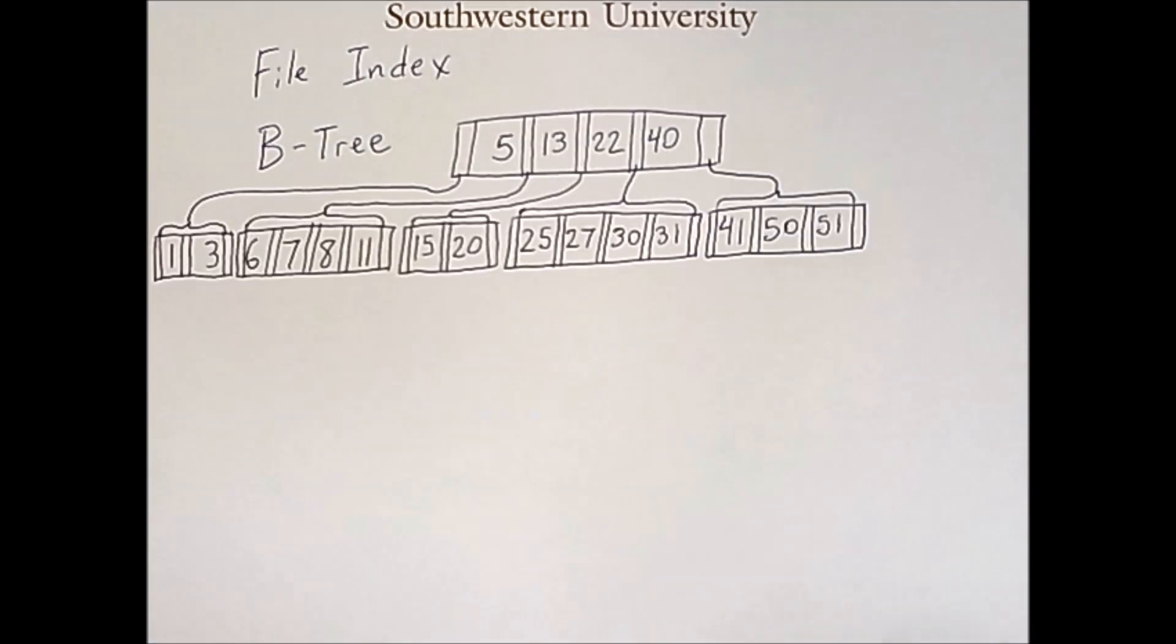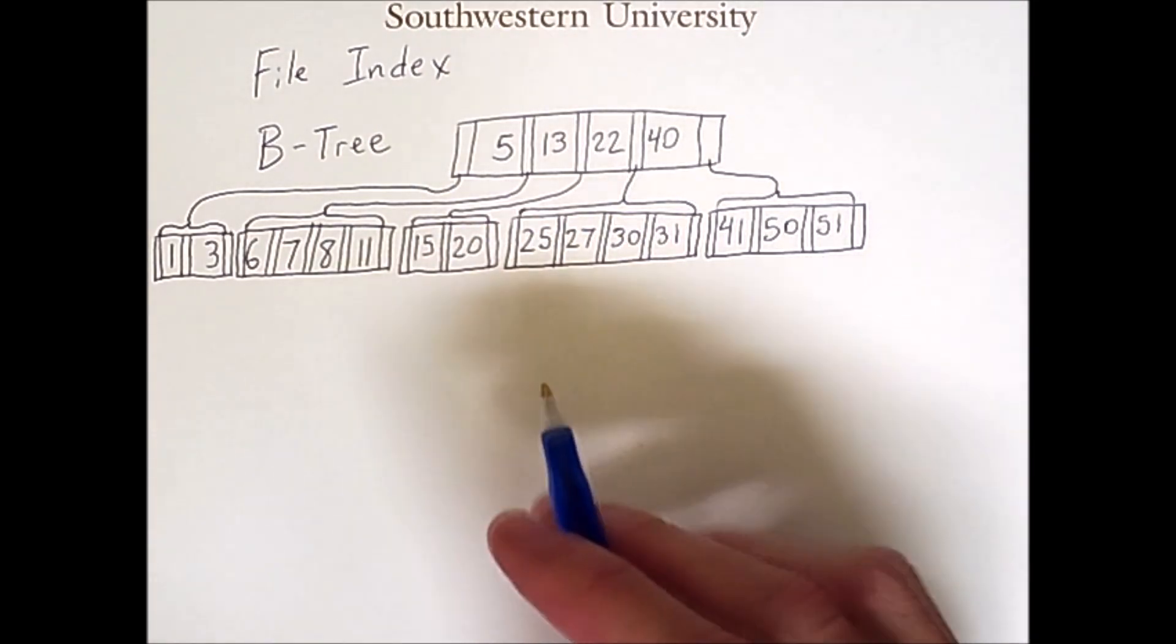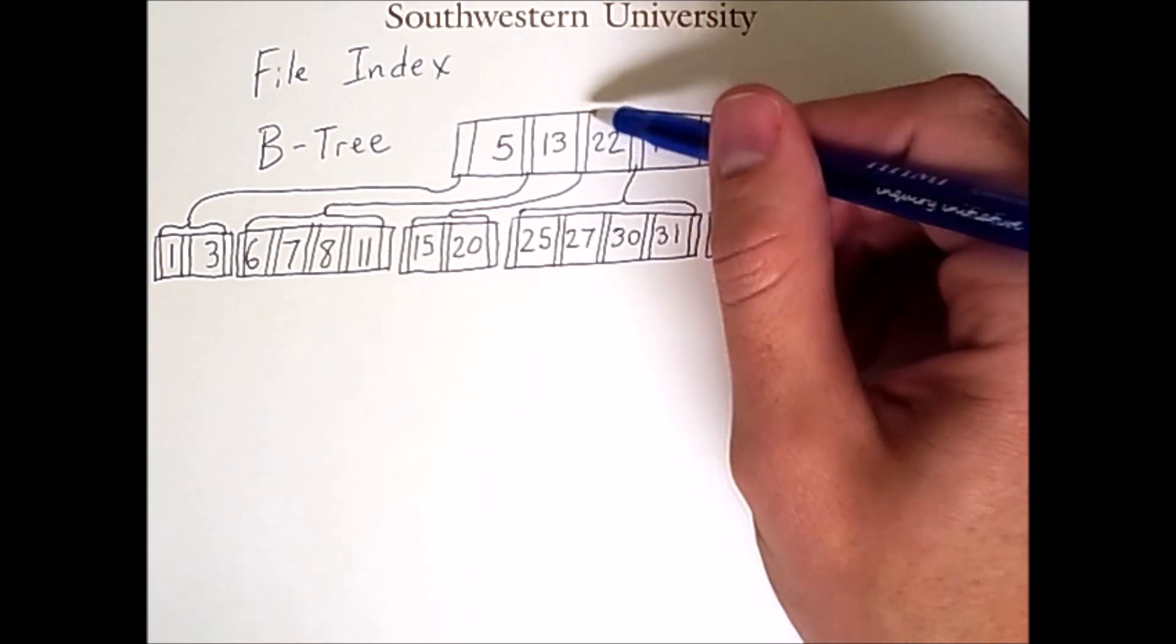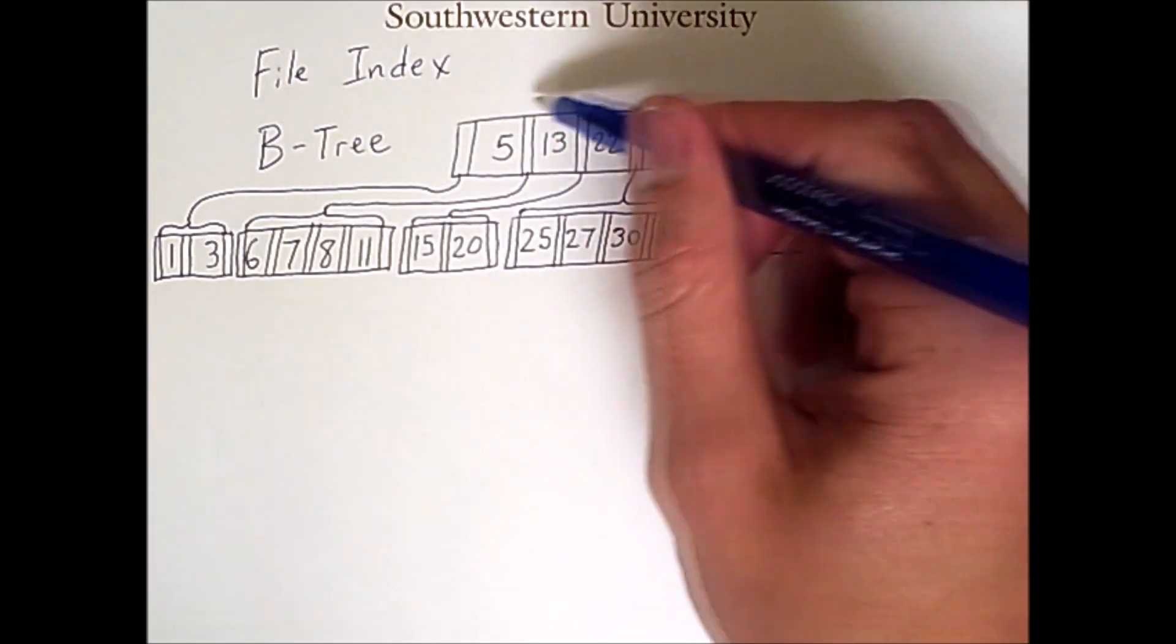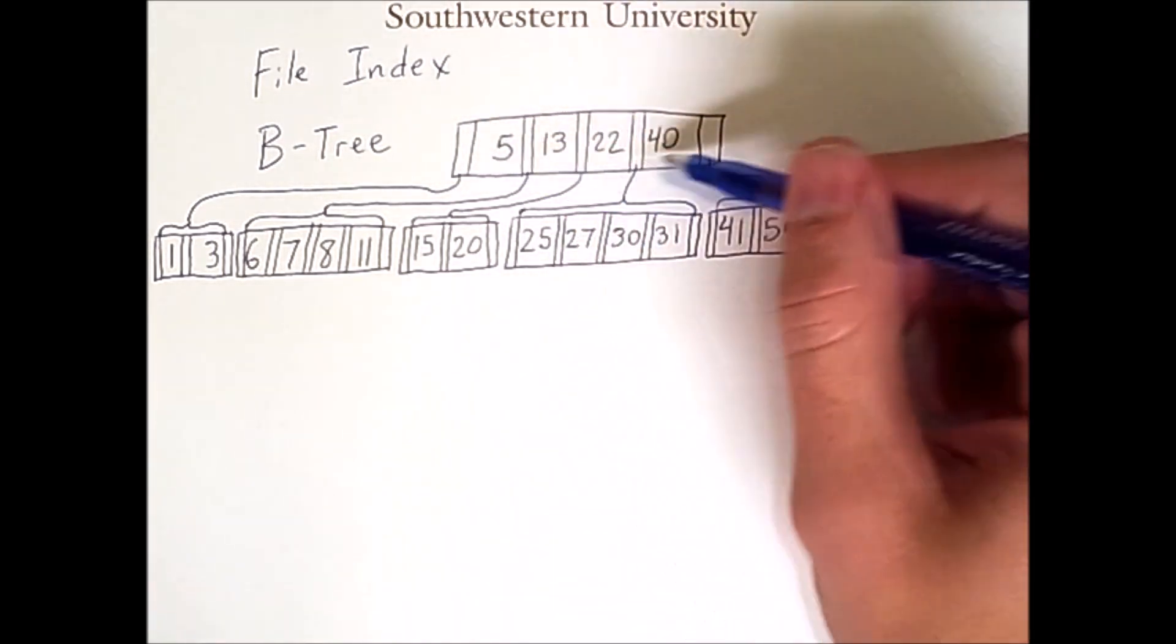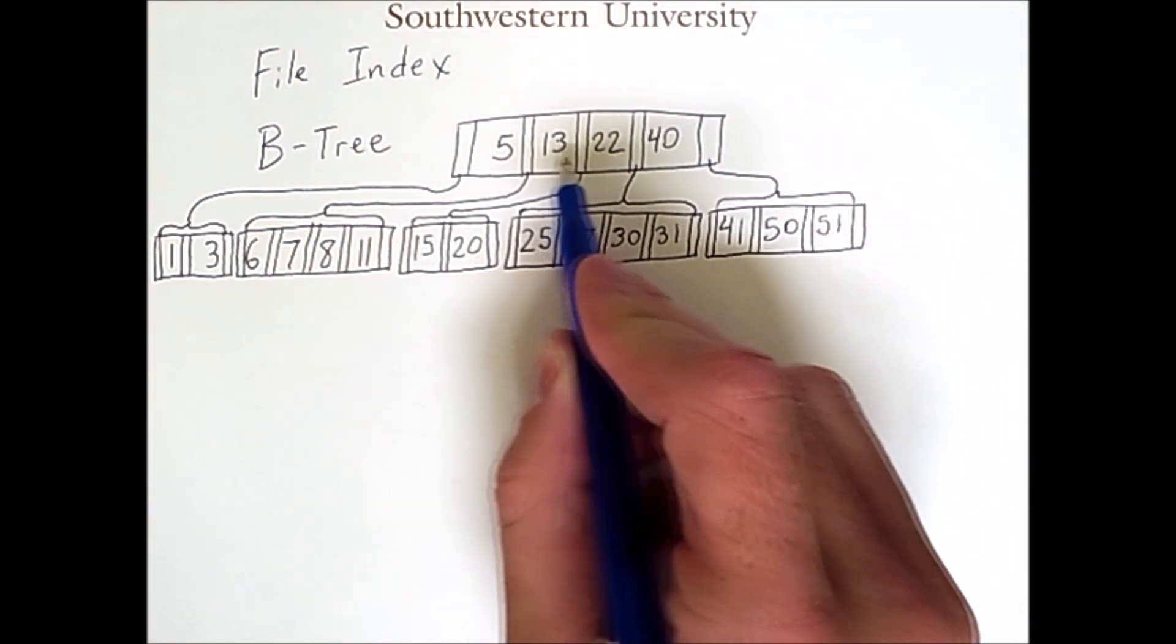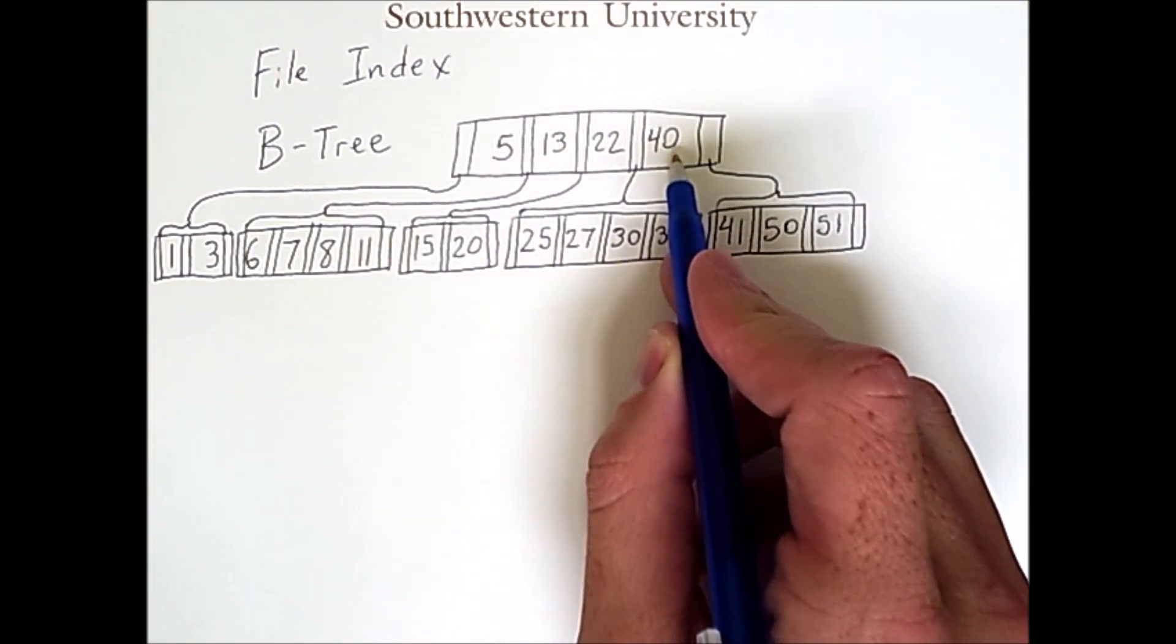Here is an example tree. A B-tree maintains its keys in a sorted order. So this entire block here is a single node of this tree, and this node contains one, two, three, four keys.